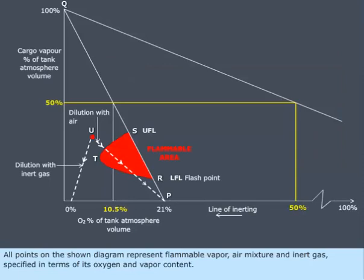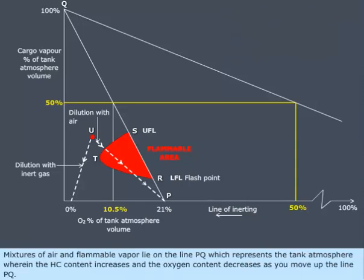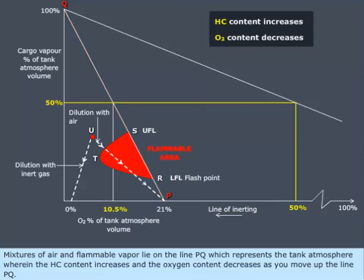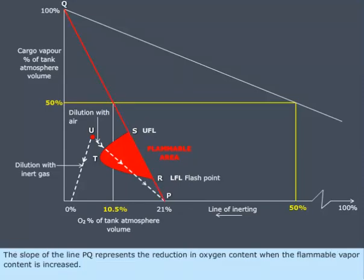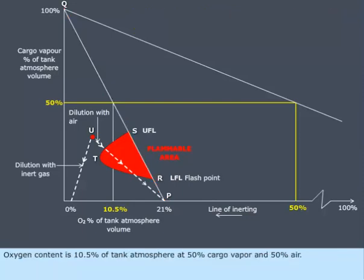All points on the shown diagram represent flammable vapor, air mixture and inert gas specified in terms of its oxygen and vapor content. Mixtures of air and flammable vapor lie on the line PQ, wherein the HC content increases and the oxygen content decreases as you move up the line PQ. The slope of the line PQ represents the reduction in oxygen content when the flammable vapor content is increased. Oxygen content is 10.5% of tank atmosphere at 50% cargo vapor and 50% air.